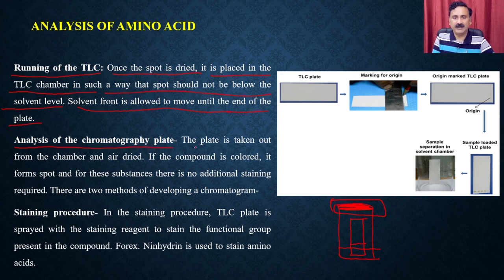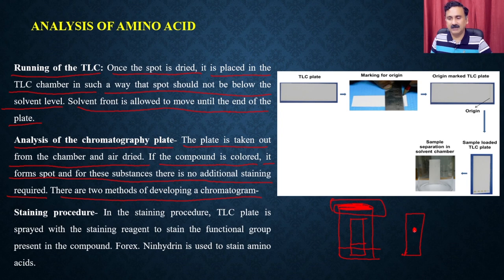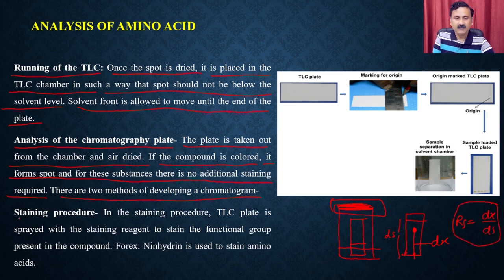For analysis, the plate is taken out from the chamber and air dried. If the compound is colored, it forms a visible spot and no additional staining is required. You can measure the solvent distance dS and the analyte distances dX to calculate the RF value by dX divided by dS. For colored compounds there is no need for any additional staining procedures.